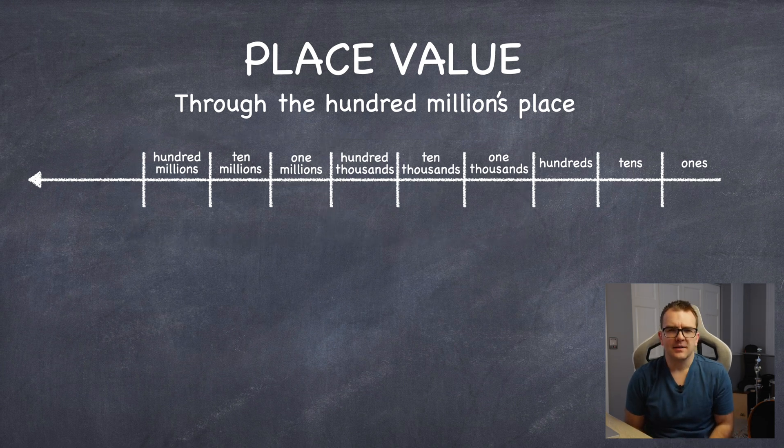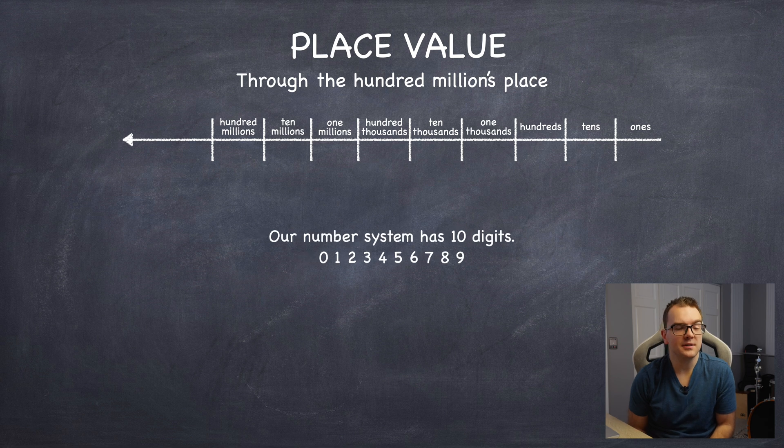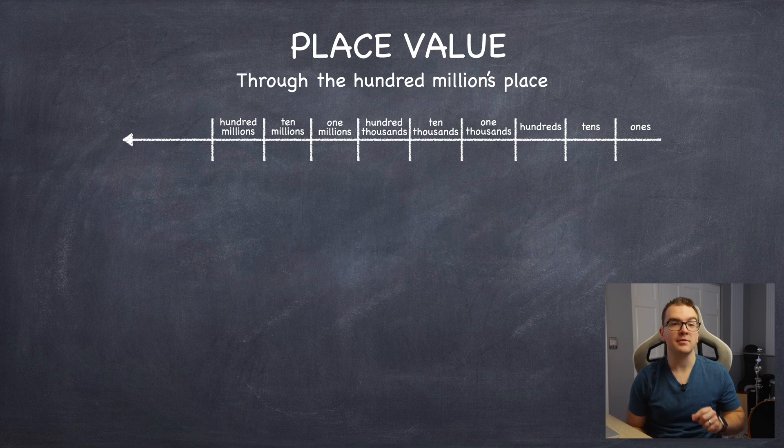Let's take a little step back. So, our number system has 10 digits, right? 0, 1, 2, 3, 4, 5, 6, 7, 8, and 9. And each number place or each of these boxes in our place value system can hold up to nine groups.